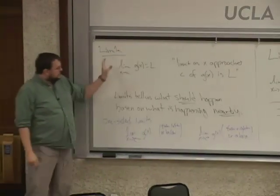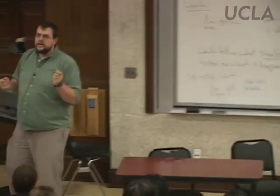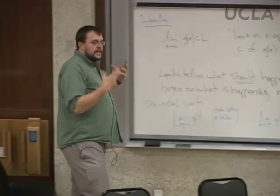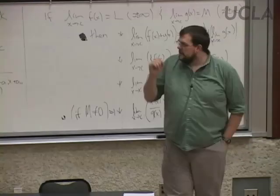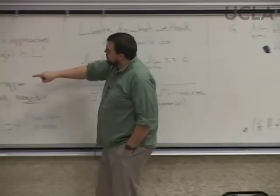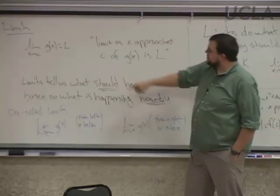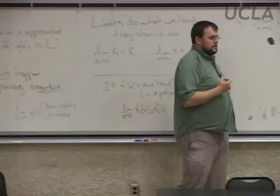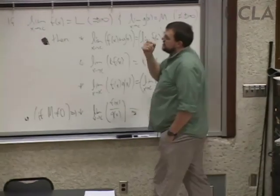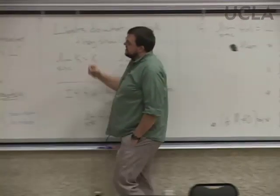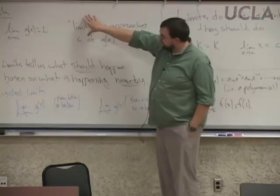Mathematics likes to have compact notation. The idea about limits is we might have a function g of x, and at x equals c, we don't know what's happening — we might have something like zero over zero, which is what happens when trying to find a tangent line. The limit tells us what should happen based on what is happening nearby. You look at g of x near values close to c, nearer and nearer, and say what value L you should get. L is a single fixed number — you can't approach two different numbers simultaneously.